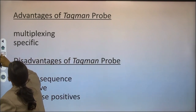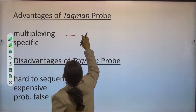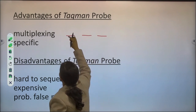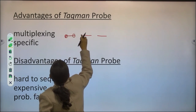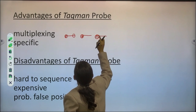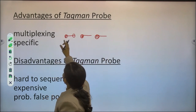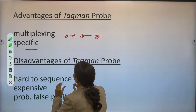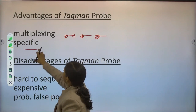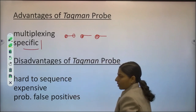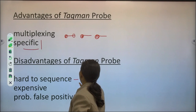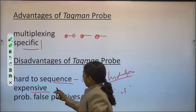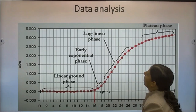Advantages of TaqMan probe over SYBR Green: multiplexing can be done — if we need to detect multiple genes in a single reaction, probes with different dyes can be designed to detect them simultaneously. It is highly specific since the probe is designed from a specific target sequence and binds only to the complementary strand. Disadvantages include difficulty in sequencing due to hydrolysis, it is more expensive, and it can give false positives — it is not 100% accurate.